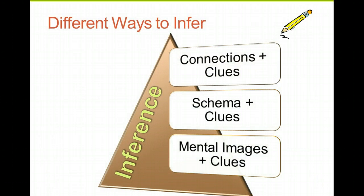There are a couple of different ways to infer. It could be personal connections to clues in the text, your schema — your background knowledge and information on the topic — plus clues from the text. It can also be your own mental pictures, images, and memories combined with clues in the text. All of these work together to help you better understand what you're reading.